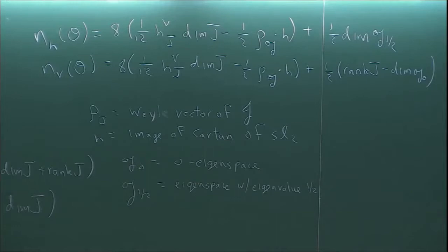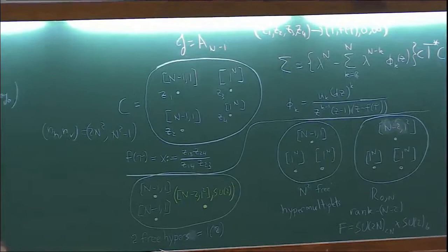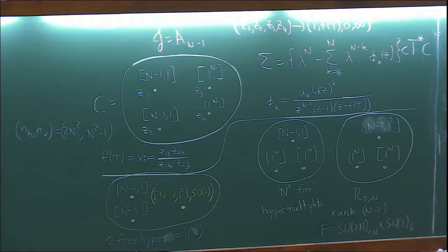A nilpotent orbit corresponds to a particular embedding of SL(2) up to conjugacy. What I have to do is decompose the adjoint representation and read off the numbers. G_{1/2} is basically telling you the number of copies of even-dimensional representations of SL(2) that appear in the decomposition of the adjoint. And G_0 is the number of odd-dimensional representations of SL(2) appearing in the decomposition of the adjoint.